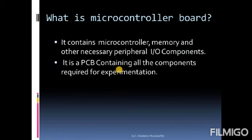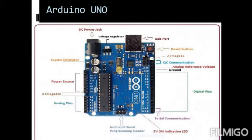What is a microcontroller board? It contains a microcontroller, memory, and other necessary peripheral components. It is a PCB — a printed circuit board containing all the components required. Simply put, we can call it a microcontroller board.